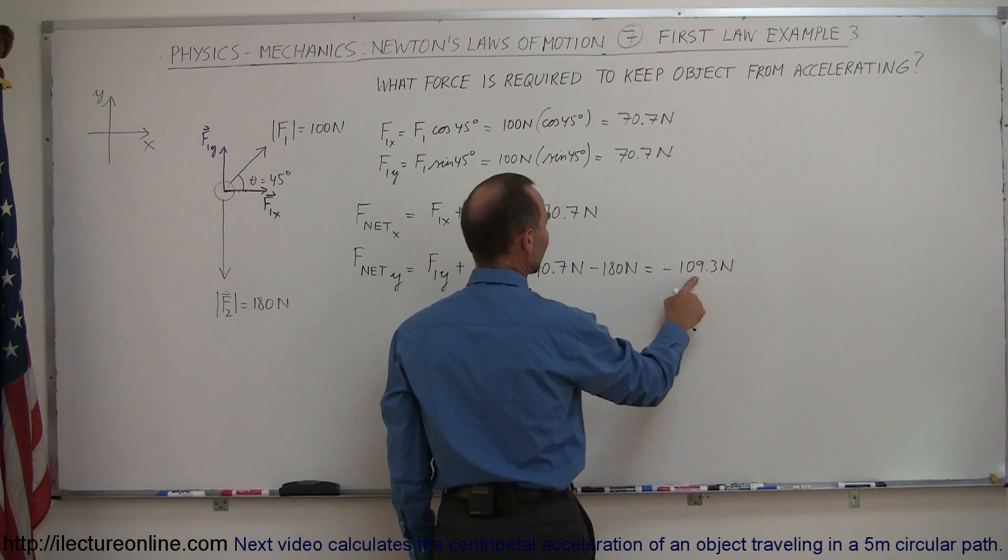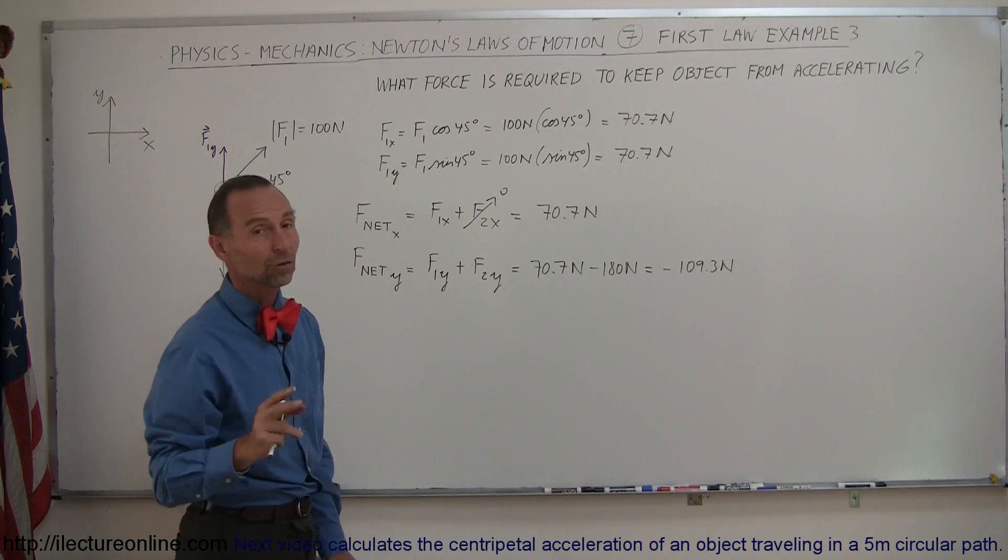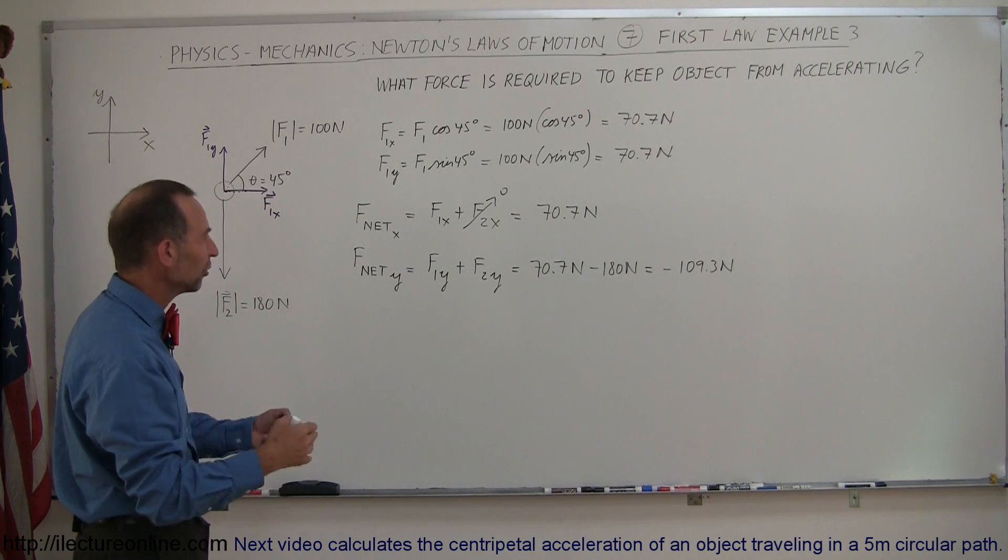Let's see, if we add 70 to this, we do indeed get 180. So there we go. Those are the X and Y components of the resultant, or the net force.